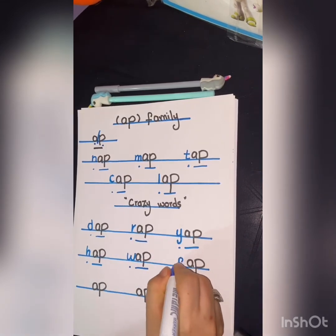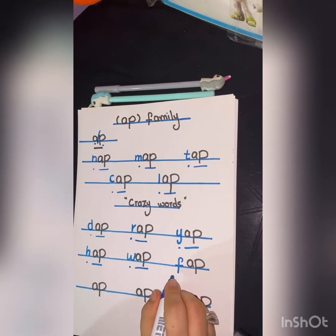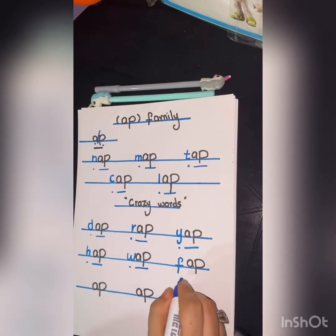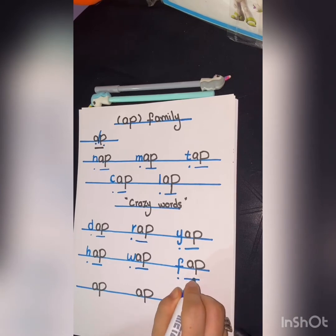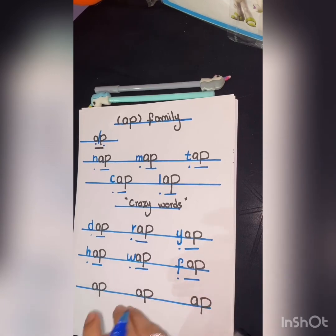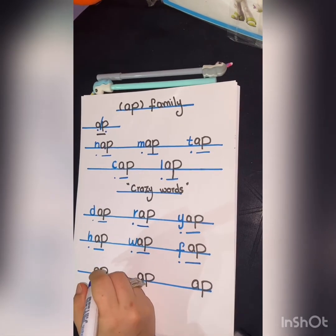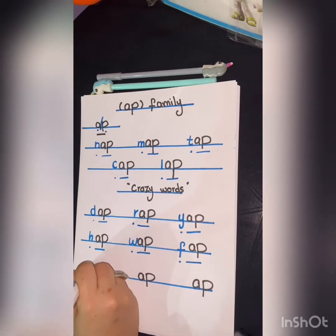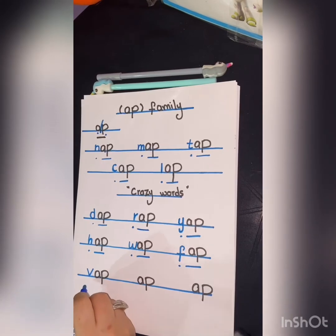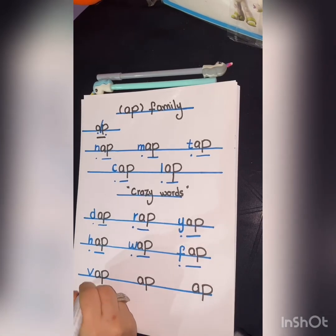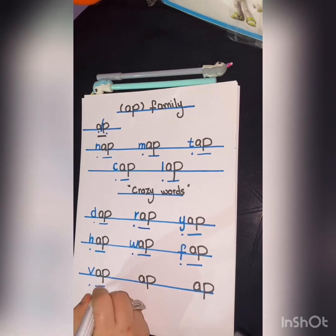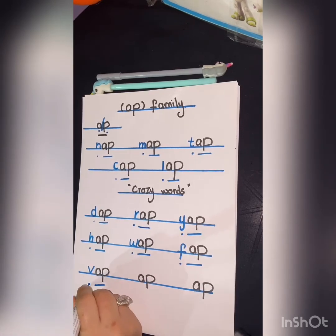When we add the letter F, the sound of the letter F is 'f.' Cut and blend: F-ap, fap. Super! Another one — when we add the letter V, the sound of the letter V is 'v.' Let's make cut and blend: V-ap, vap, vap. Excellent!